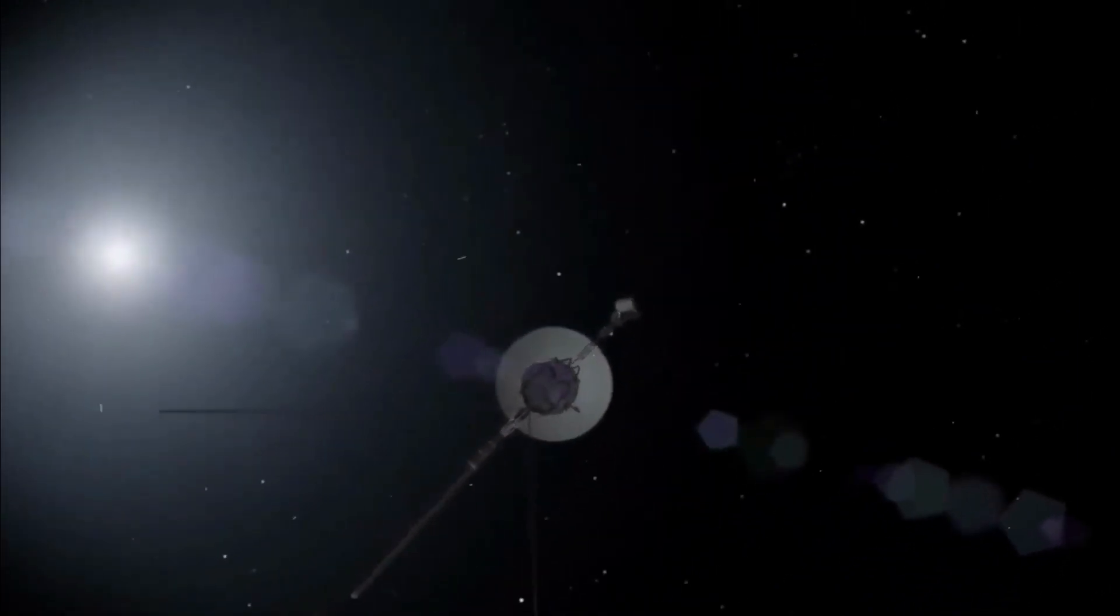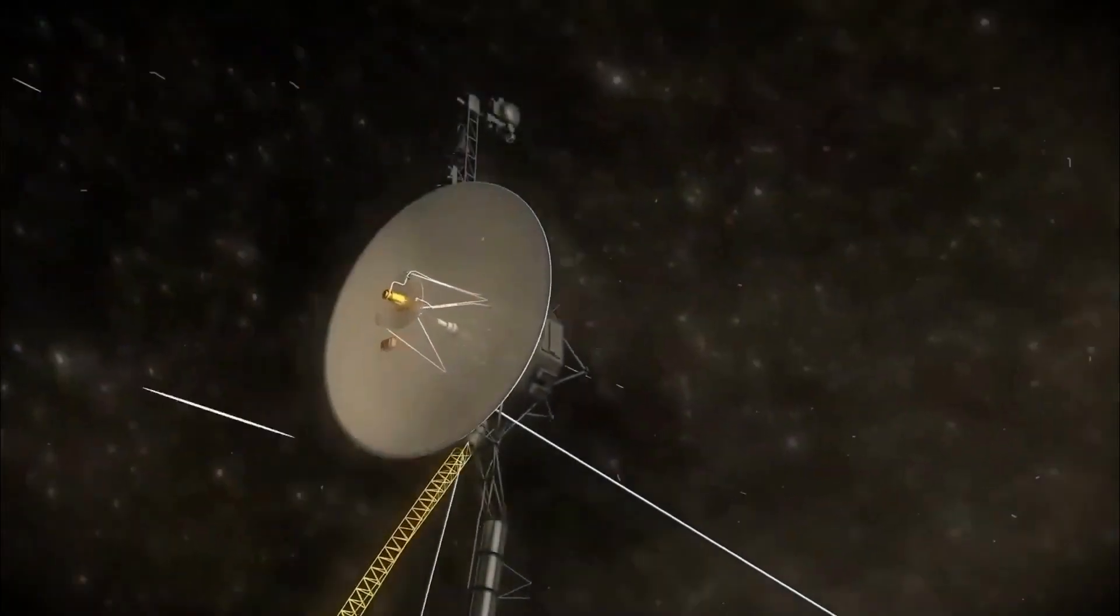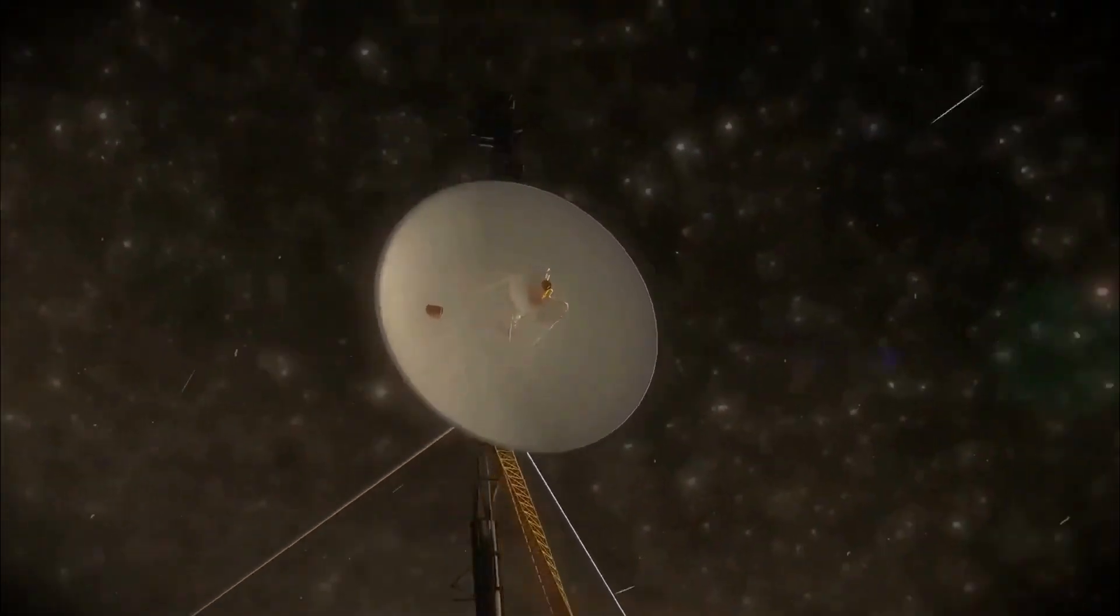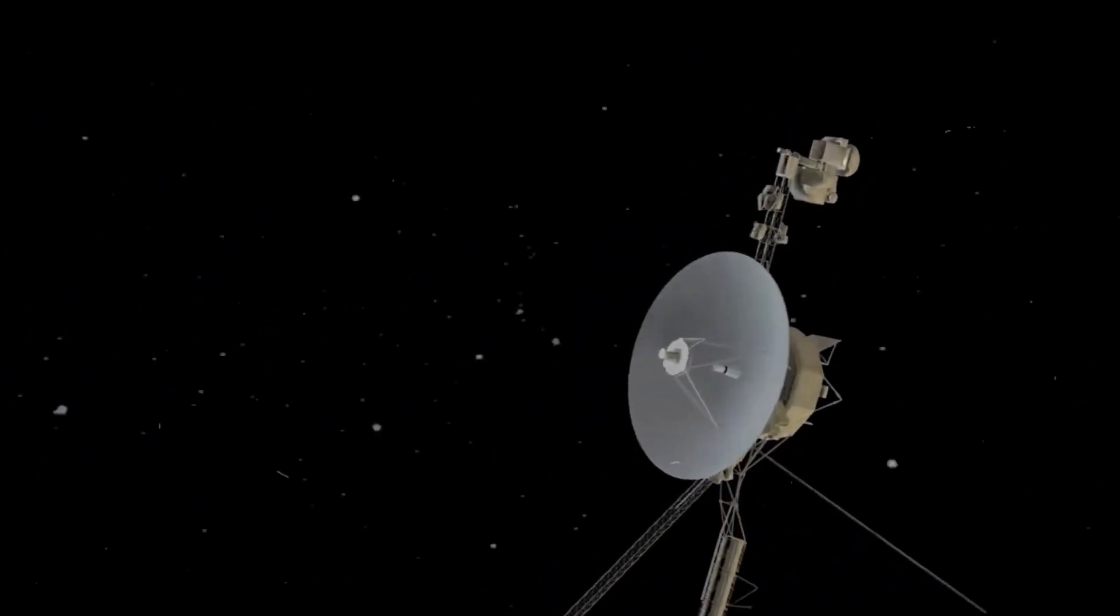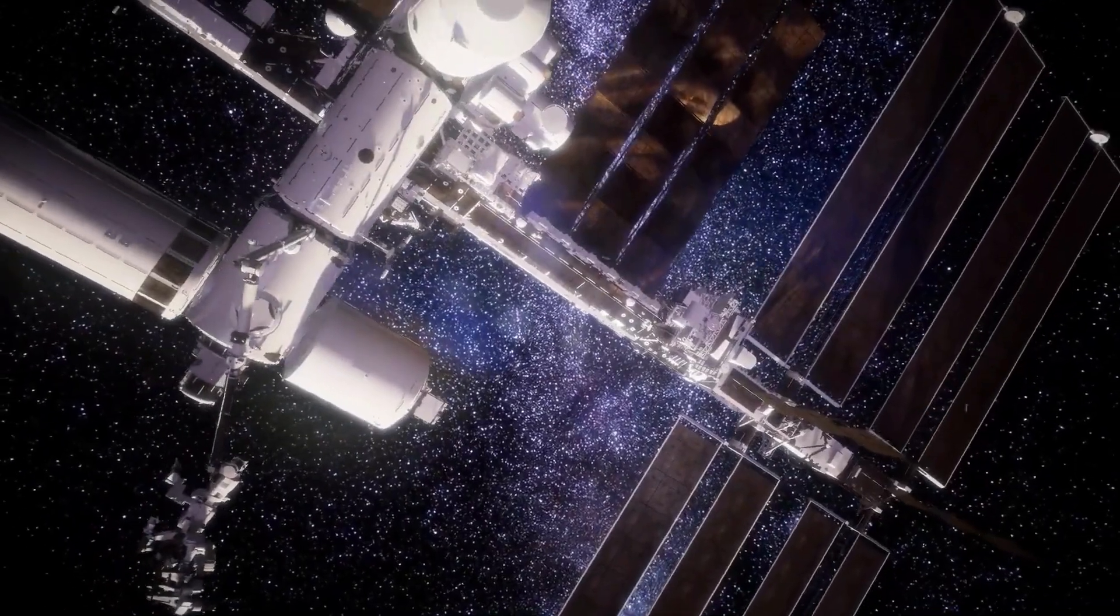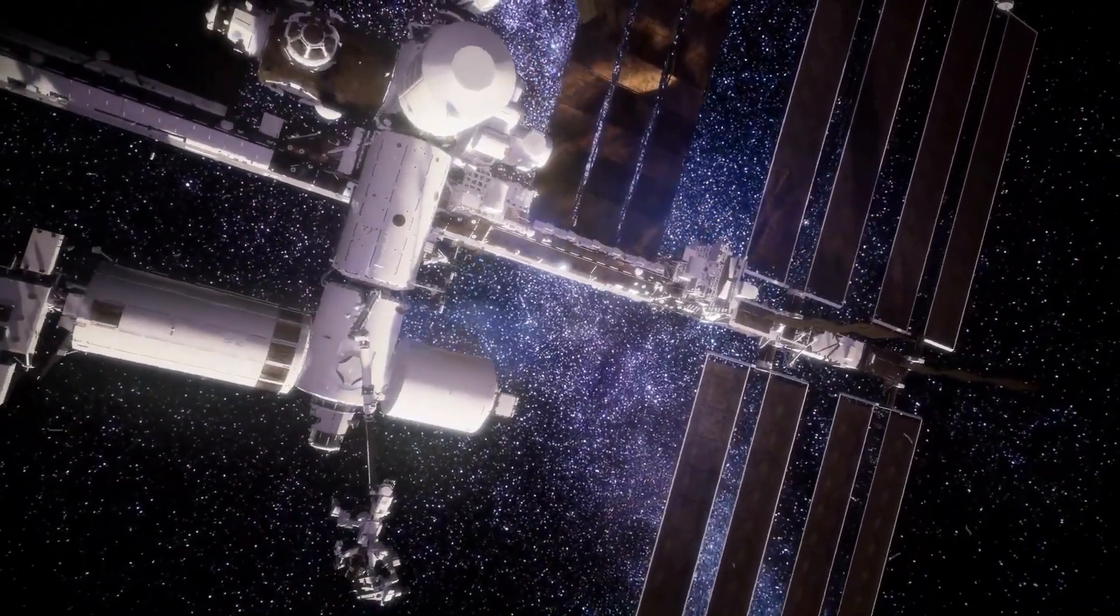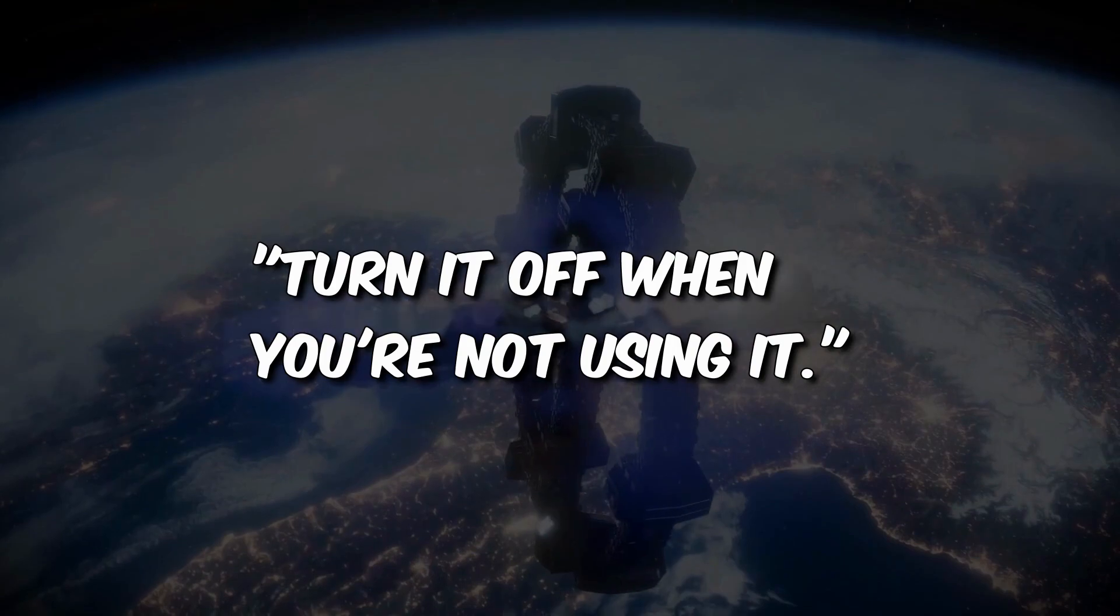Well, Voyager 1 has dual-redundant computer systems, like having two sets of backup plans for a road trip, ensuring it can keep trucking through the cosmos. But here's the amazing part. To save power, engineers play a cosmic version of turn it off when you're not using it.